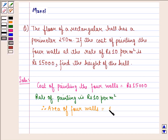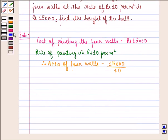So that is rupees 15,000 divided by rupees 10, that is equal to 1500 meter square. So area of four walls is equal to 1500 meter square.